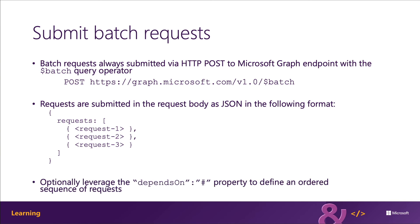Unless the depends on property is defined within a request that references the ID of a previous request, the requests aren't guaranteed to be executed in any order. Microsoft Graph determines when they are executed, which may be simultaneously.